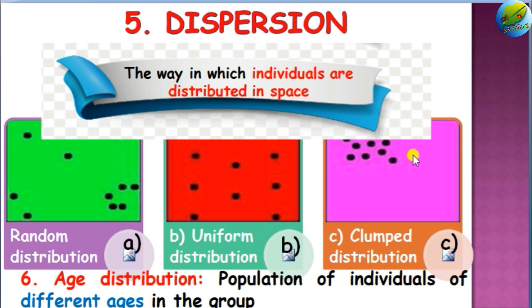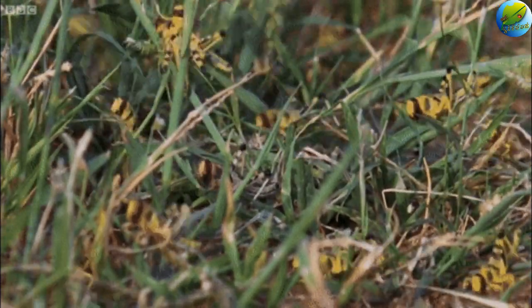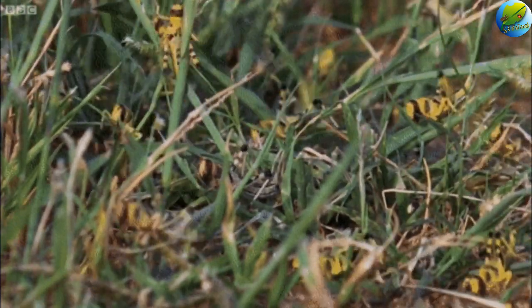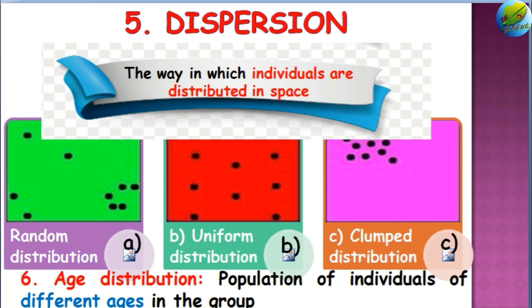The third kind of dispersion is clumped distribution, which is due to the attraction behavior of individuals in the population. This may be due to aggregation pheromones secreted to migrate from one place to another, or reproduction pheromones secreted for multiplication purposes. Locusts in normal conditions are randomly distributed, but when they become clumped, it means they are going to migrate or the migratory population is ready. Clumped distribution is the most common in nature as it relates to safety in numbers, social interaction, mating, and caring for the young. Uniform distribution is less common due to scarcity of resources such as food, and random distribution is quite rare.